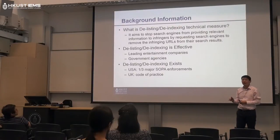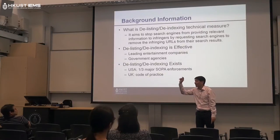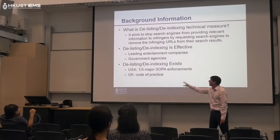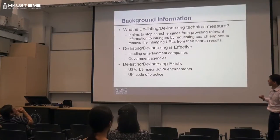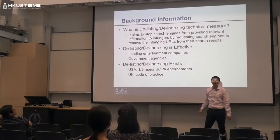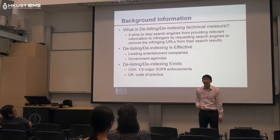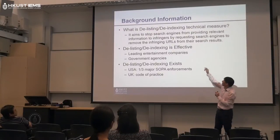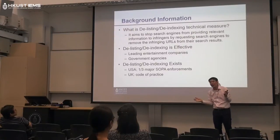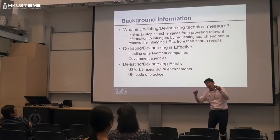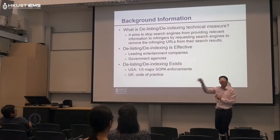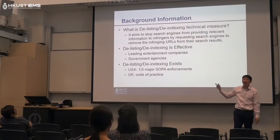Is this effective? For experienced users, they may know they don't need search engines — they can go directly to a particular website and download the movie. That would be another technical measure to control. But we're focusing on search engines here. Many anti-piracy companies do this because it is cost effective — just writing a letter and sending requests. However, you have to be very specific about what keywords you want to control. For example, for Avengers, you specify the keywords and once Google approves, they remove those results.